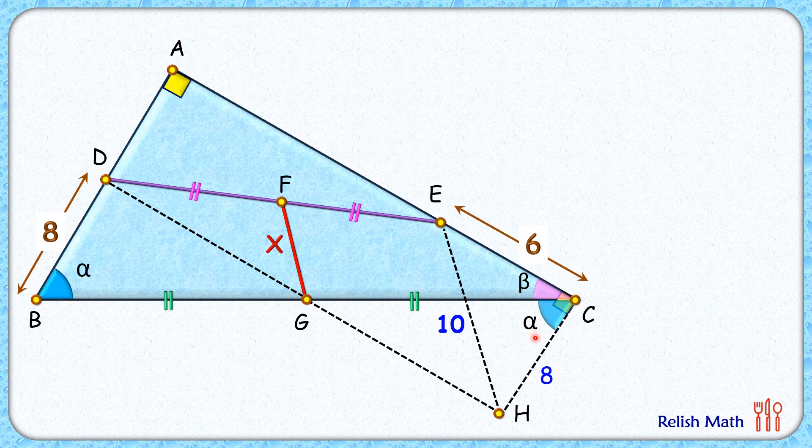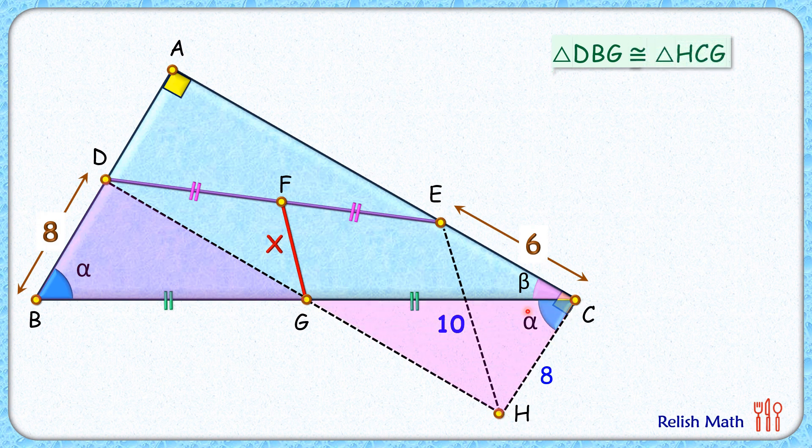Now in triangle DBG and triangle HCG, we have got side lengths as 8 and 8 centimeter, this length BG is equal to CG, and they have got angle alpha degrees in between them. Thus by side-angle-side, these two triangles are congruent.